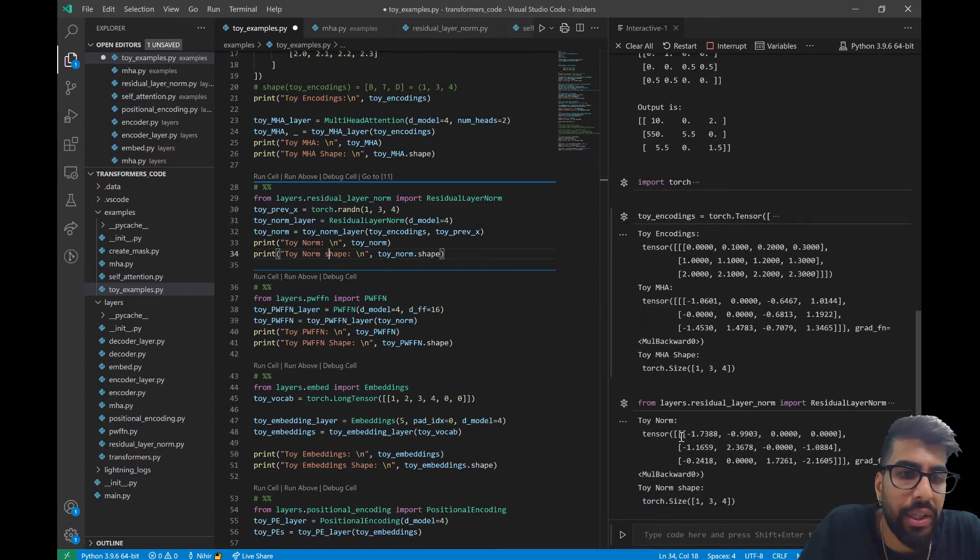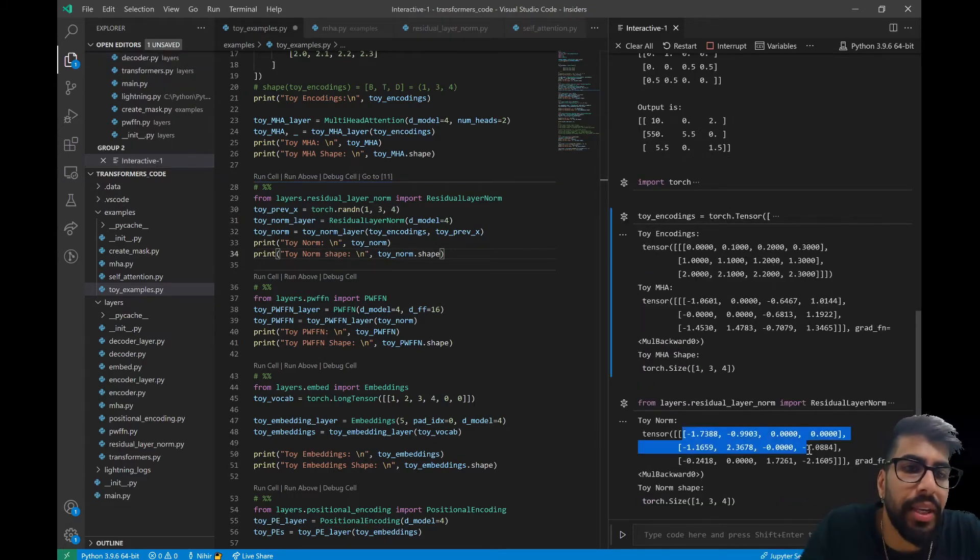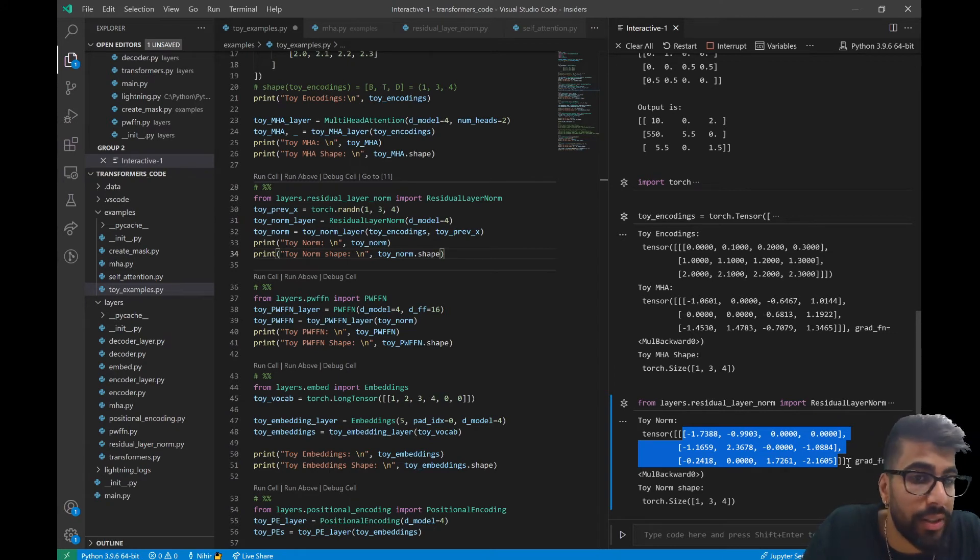So what we're going to do internally is this toy norm layer is called, it will add our x so our toy encodings and also the residual connections or the residual tensor, which is just here initialized randomly and we will then take this output, the layer normalization, the layer normalized output, print it and print its shape as well. And there we go. Obviously it's kind of meant to be uninterpretable, it's all in hidden states so we're not training this network, but this layer normalization helps stabilize and normalize the outputs of our multi-head self-attention mechanism and basically every mechanism that we actually run in the transformer stack.